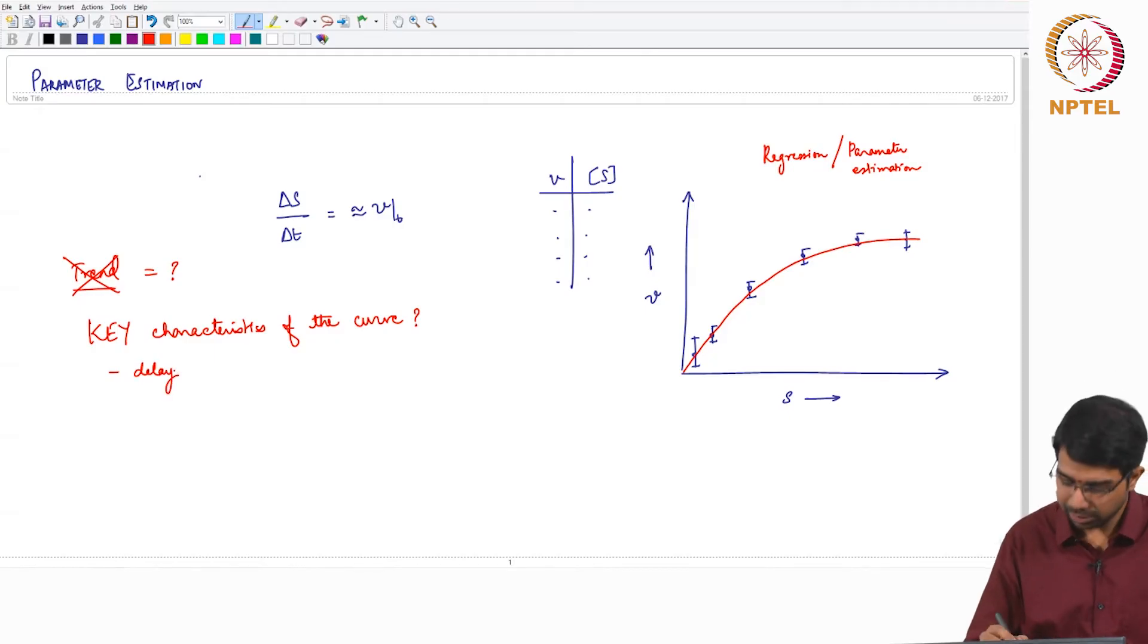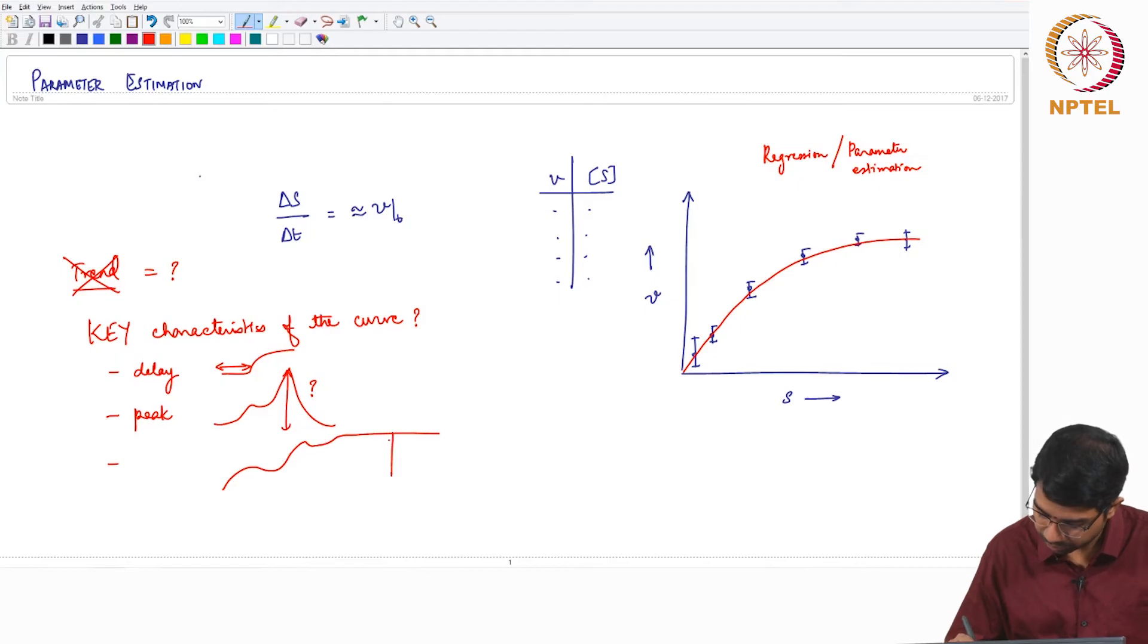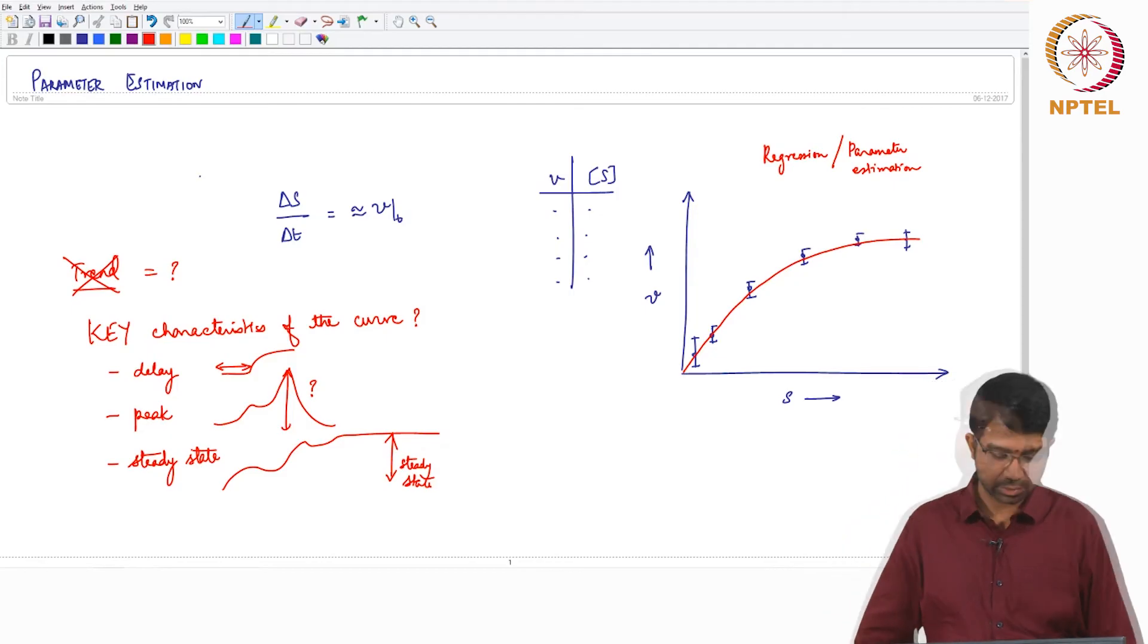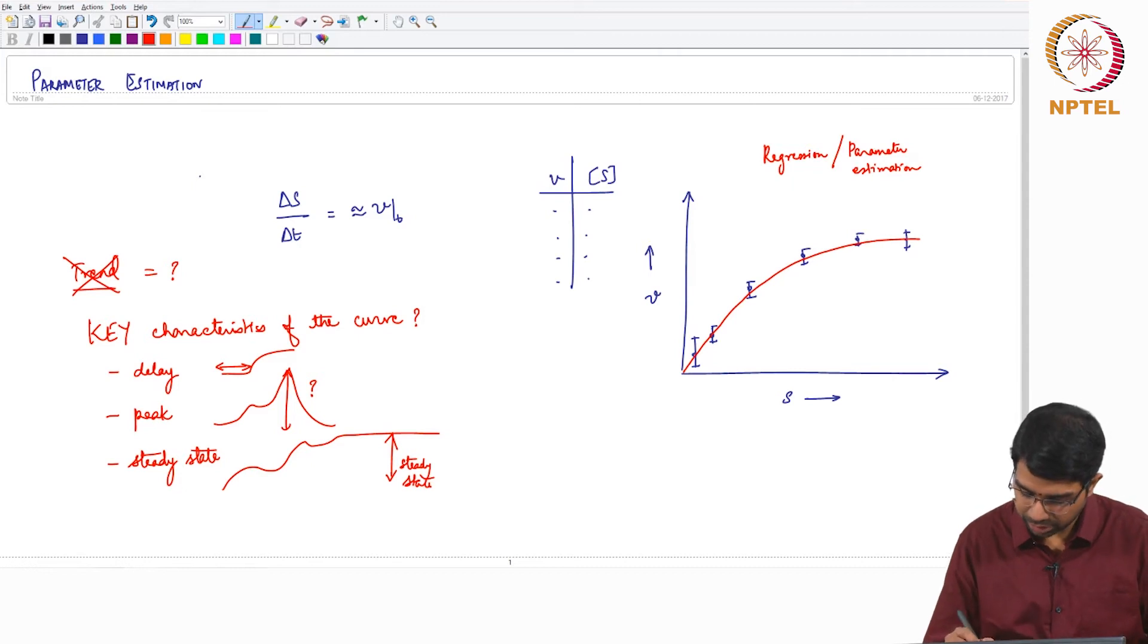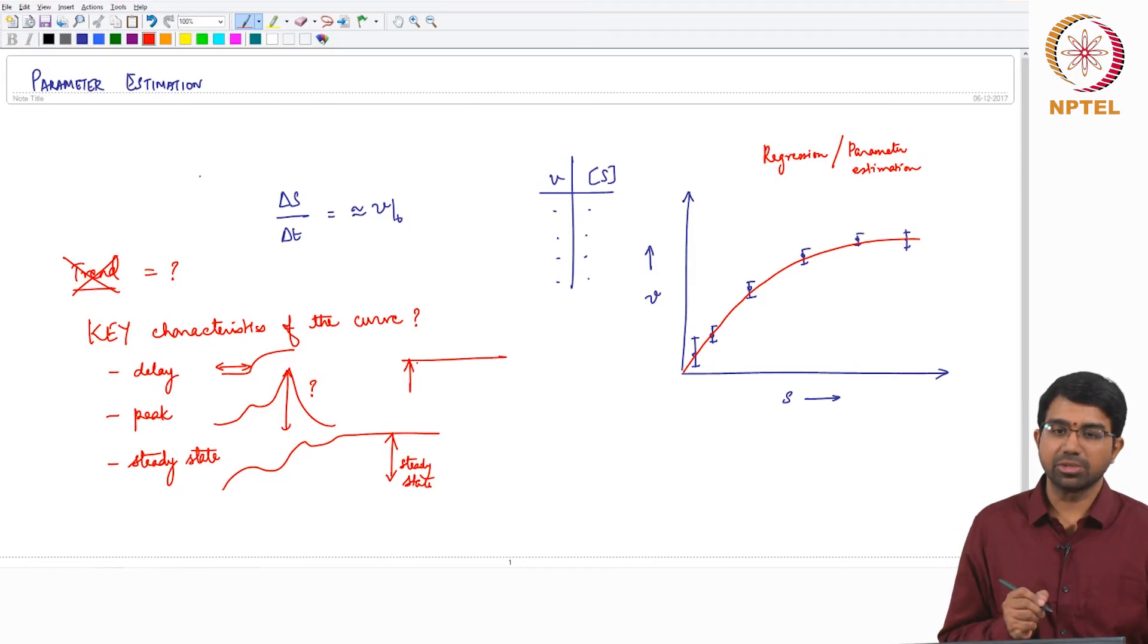What could be the key characteristics of a curve? You may have a delay, meaning like this. So you may be interested in capturing this delay in your model. You may have a peak, are you able to capture this? Very commonly you may have a steady state. Can you capture the steady state? You may have a delay in the response. So let us say you administered a drug at time t, time 0.